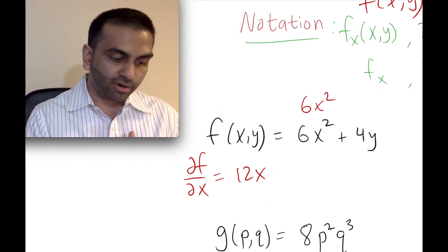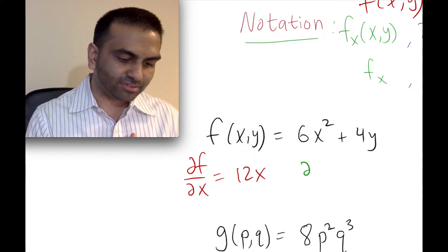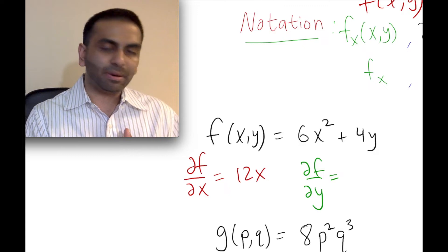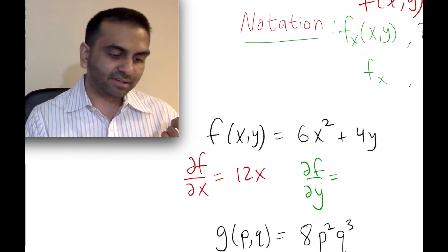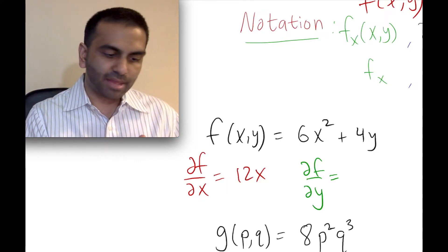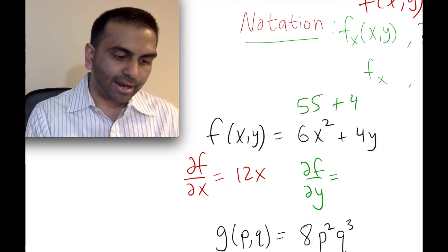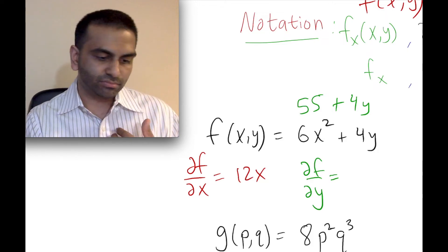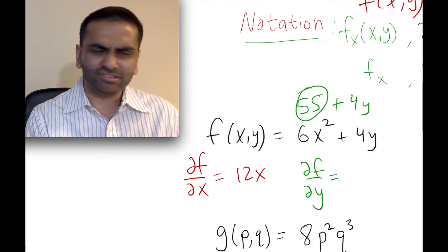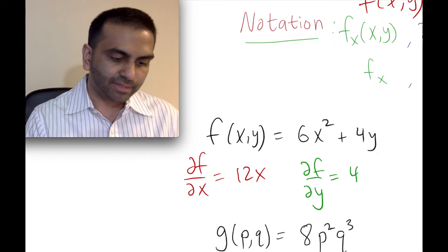Similarly, I could ask for the derivative of this function with respect to y. Now the roles flip: 6x² is just some constant, because x is just some number — squared and times 6 is still a number. So this is like 'some constant plus 4y.' The derivative of the constant term is 0, so it's really just the derivative of 4y, which is 4. That's the partial derivative with respect to y.